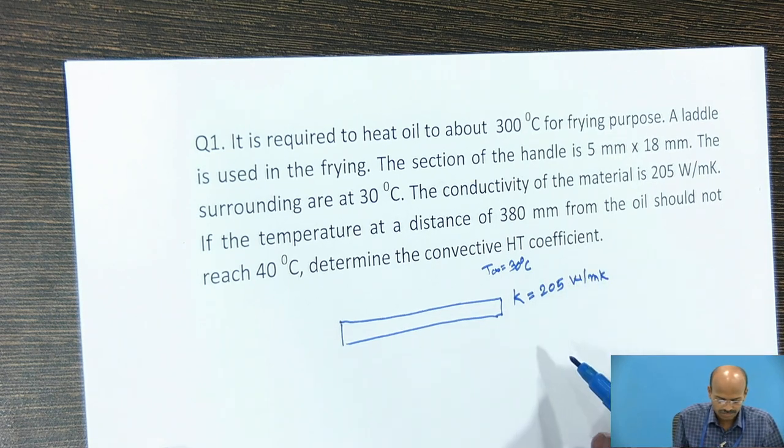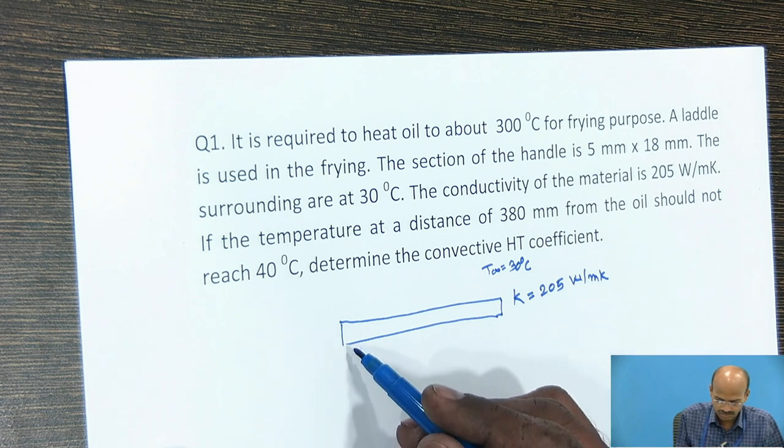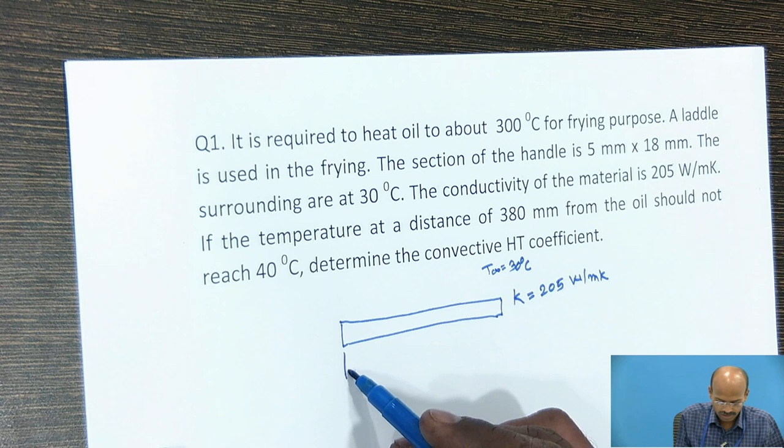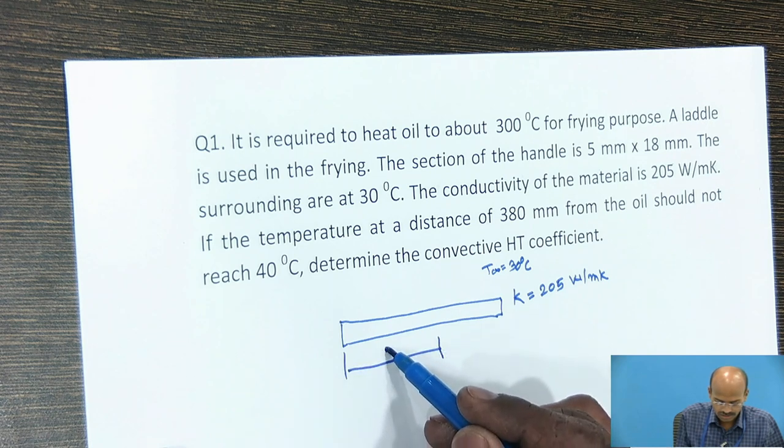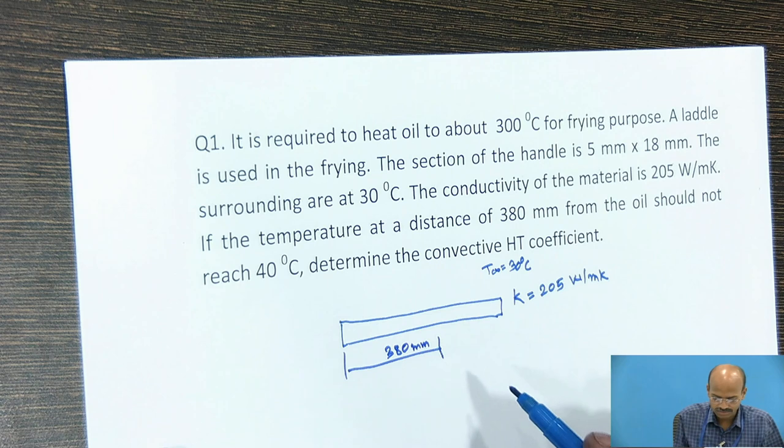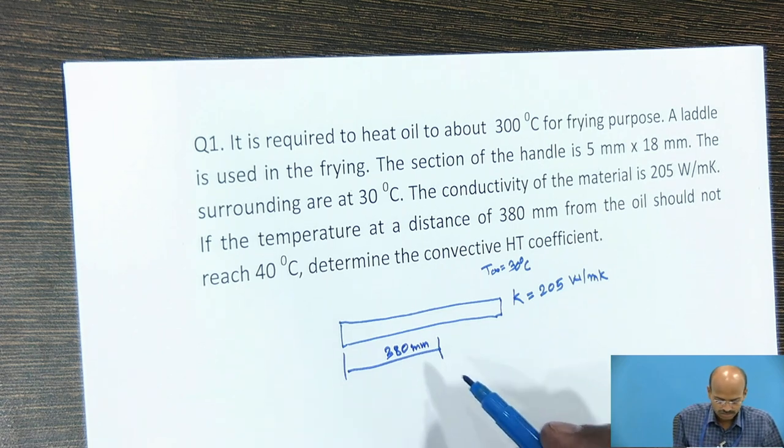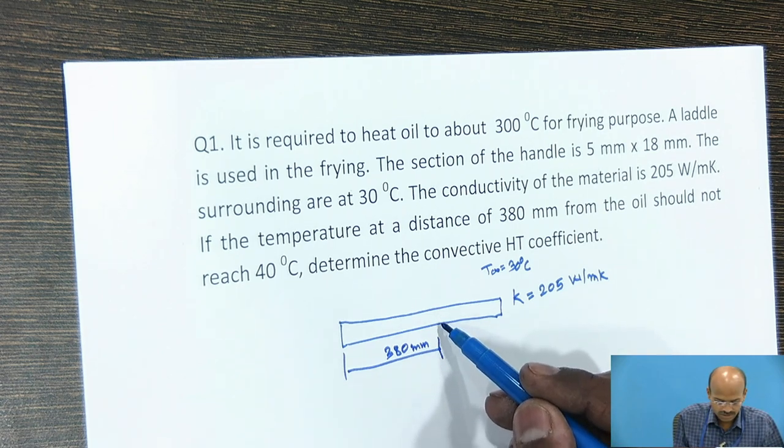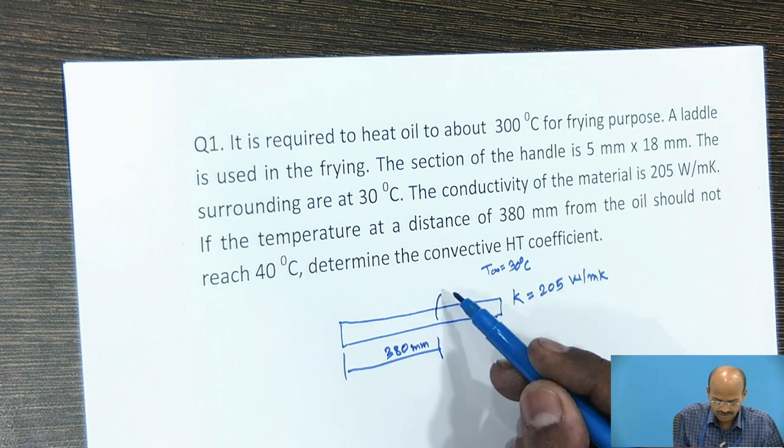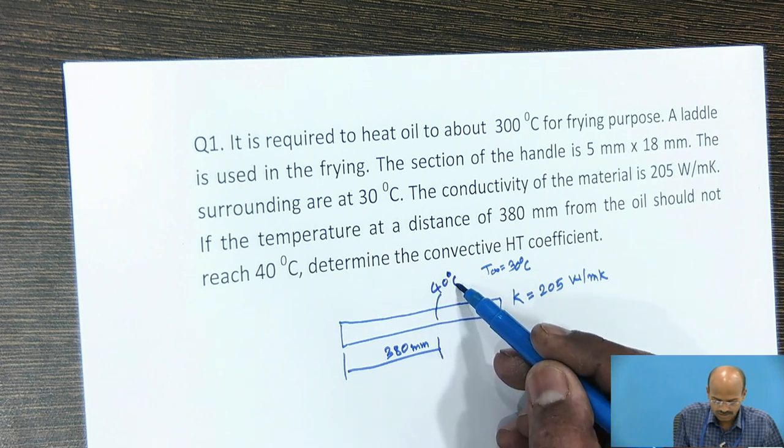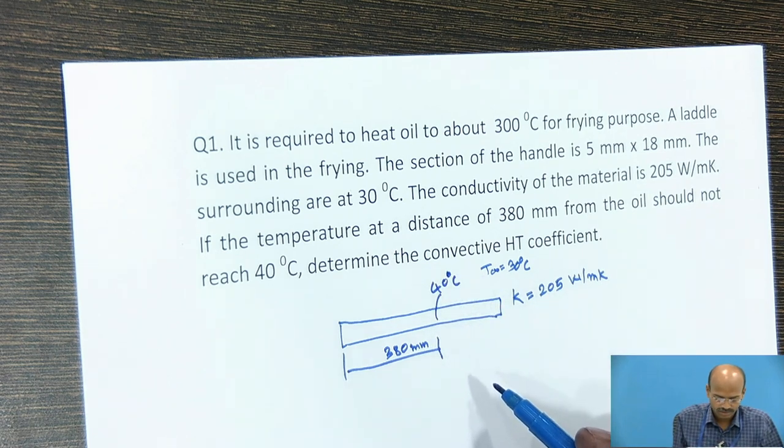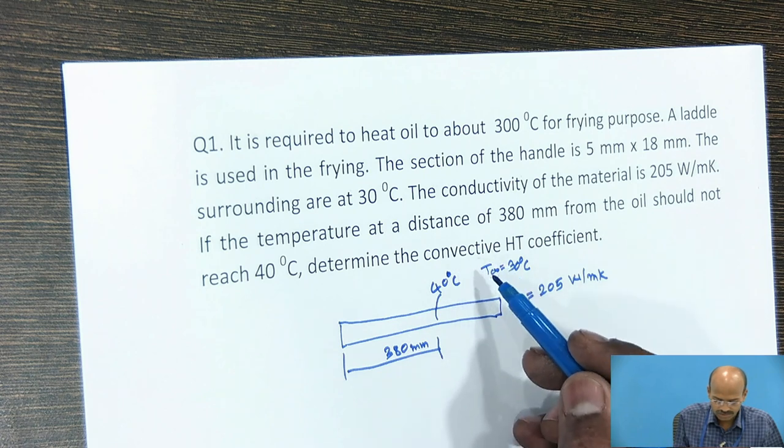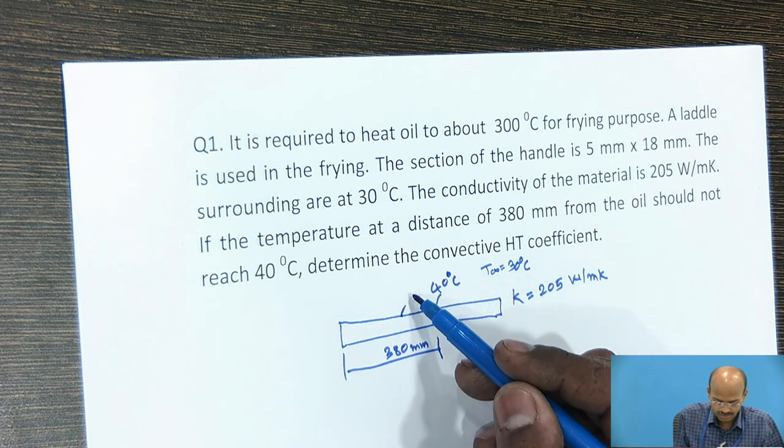If the temperature at a distance, suppose this is the origin, and consider this as 380 mm distance, and the given temperature is 40 degree Celsius. Then they are asked to find the convective heat transfer coefficient.